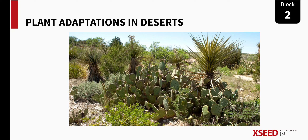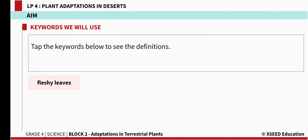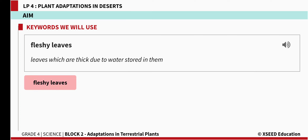Hello students, today we will be doing block number 2, LP4: Plant Adaptations in Deserts. Our aim is to describe the special features of desert plants that help them to survive in a harsh desert environment. The key word is fleshy leaves — leaves which are thick due to water stored in them are called fleshy leaves.